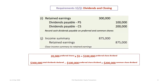Wrapping up with the final transactions: the company issues a total dividend of $300,000. Preferred shareholders are paid first — 20,000 preferred shares at $5 each equals $100,000 dividend payable to preferred. The remaining $200,000 goes to common shareholders. The last entry closes the income summary to retained earnings, as the company had net income of $875,000.